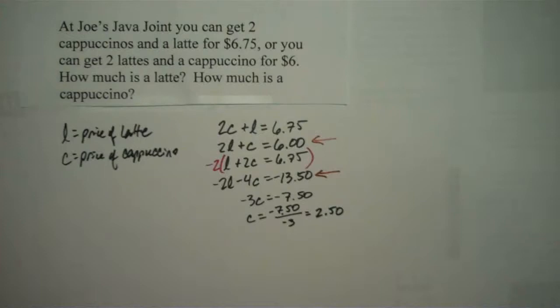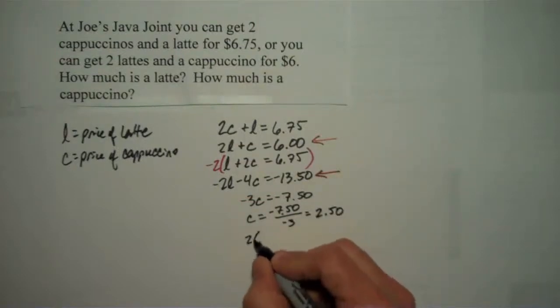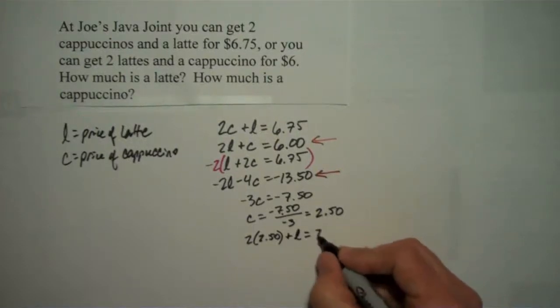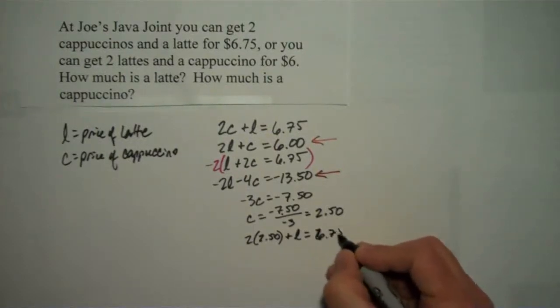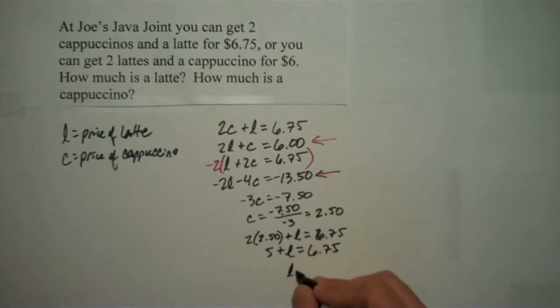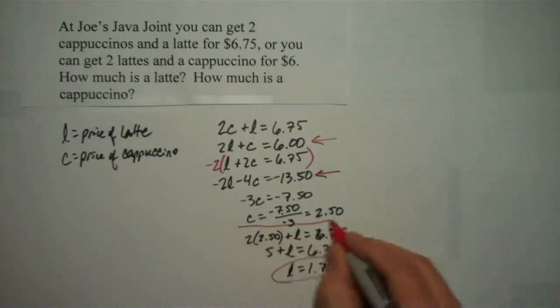Could it be? Well, let's see. Now we've got to find out what L is. Let's go from our top equation. 2 times C, 2 times 2.50, plus L equals 6.75. And so, let's see. That means 5 plus L is 6.75, which means L has got to be 1.75. So what I'm finding is that a latte costs $1.75, and a cappuccino costs 2.50.